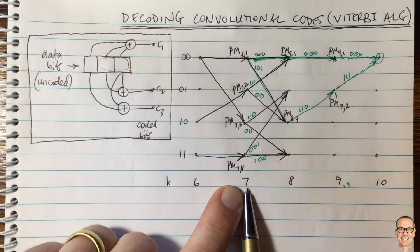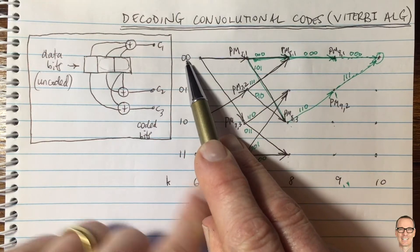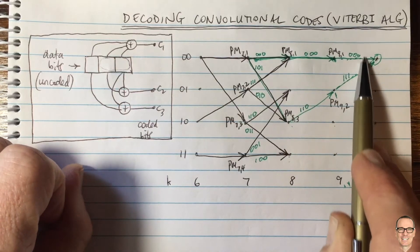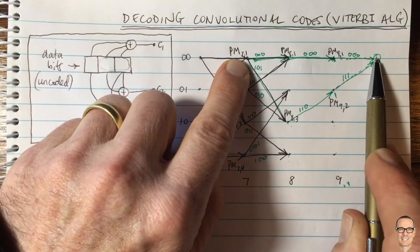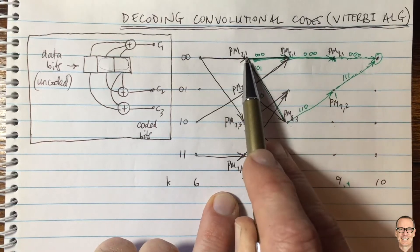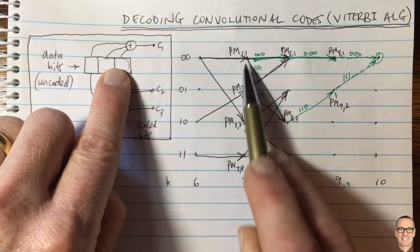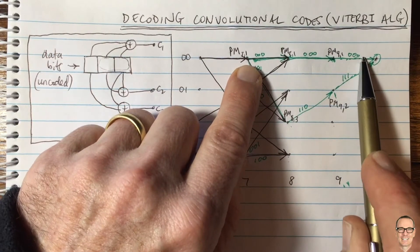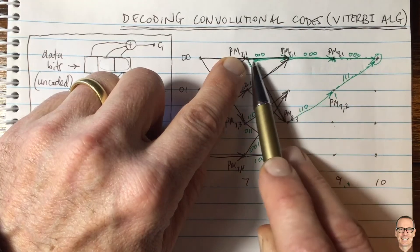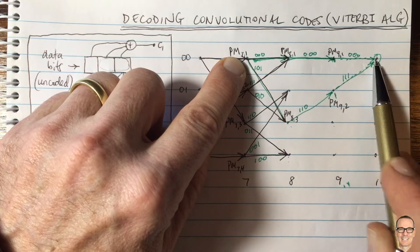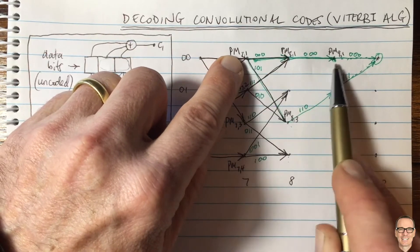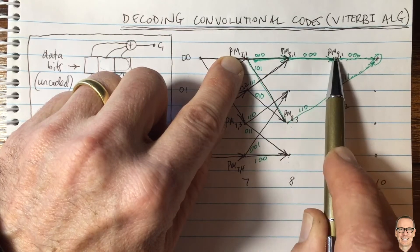Regardless of the decision made at a later state, from time less than 7 the algorithm will always pick the same data bits, because both competing paths pass through the same state at time 7. The only difference between the two path metrics is the branch metrics accumulated along the diverging portions — prior to divergence, they have the same accumulated value.